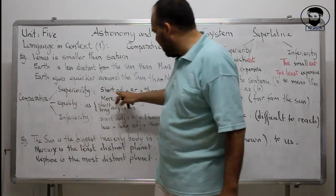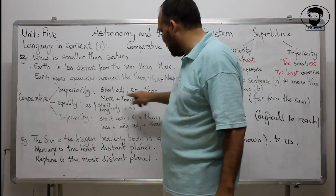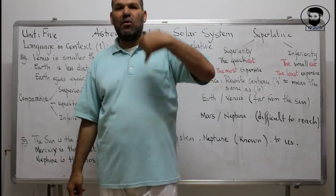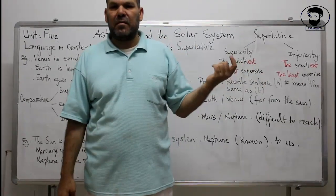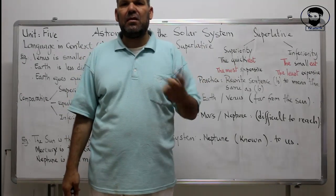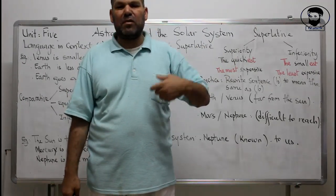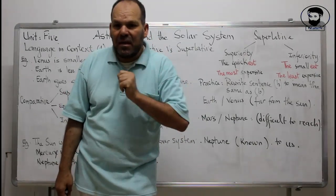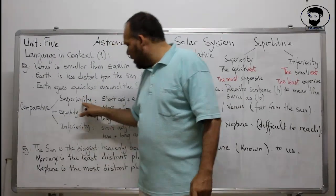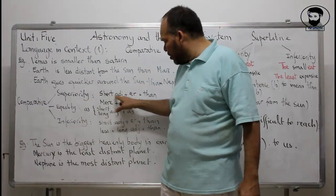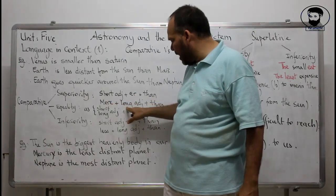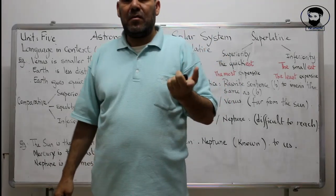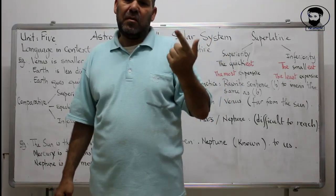For superiority with a short adjective, you add -ER plus 'than' — for example: 'I am taller than my friend.' With a long adjective, you add MORE — for example: 'I am more intelligent than my friend' or 'more serious in my studies than my friend.' You say 'more expensive,' not 'more tall' — because 'tall' is short so it takes -ER. For inferiority, you use LESS plus the adjective plus 'than' — for example: 'less tiring,' 'less expensive.'